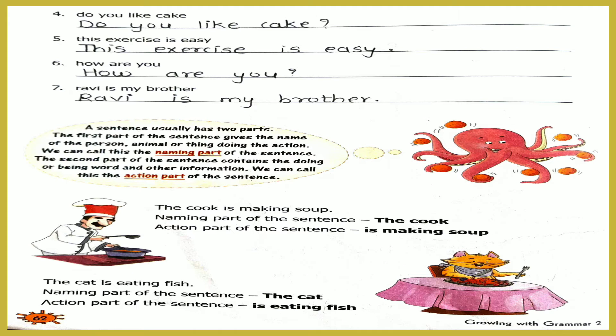A sentence usually has two parts. The first part gives the name of the person, animal, or thing doing the action. The second part contains the doing or being word and other information — we can call this the action part of the sentence. For example: 'The cook is making soup.' Here 'the cook' is the naming part and 'is making soup' is the action part. Another example: 'The cat is eating fish.' Here 'the cat' is the naming part and 'is eating fish' is the action part.